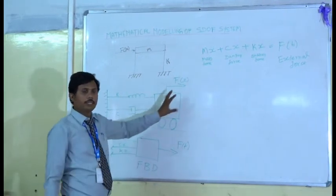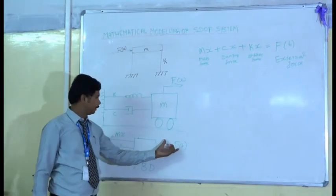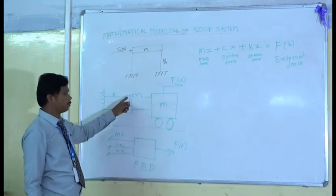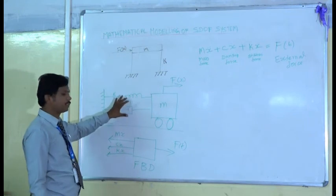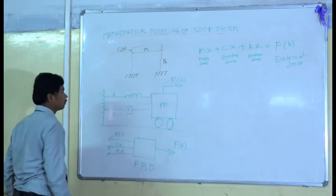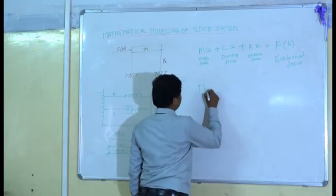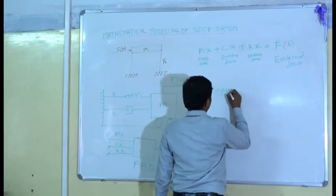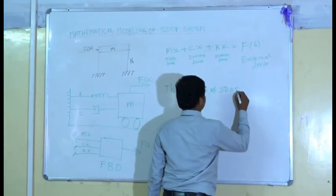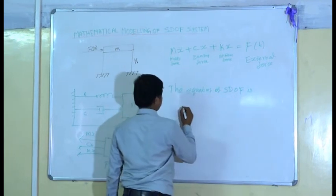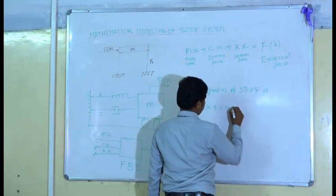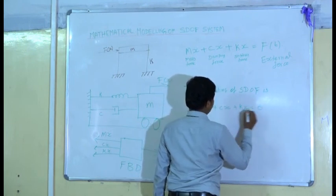During the earthquake, the force is resisted by mass of the body, spring, which is like a column, and dampers. So, the equation of single degree of freedom system is mx double dot plus cx dot plus kx equal to F(t).